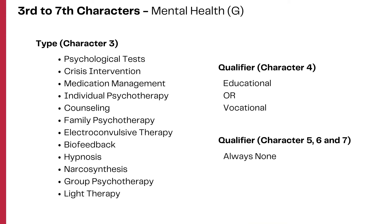The third character specifies the procedure type, such as crisis intervention or counseling. There are 12 types of mental health procedures: psychological testing, crisis intervention, medication management, individual psychotherapy, counseling, family psychotherapy, electroconvulsive therapy, biofeedback, hypnosis, narcosynthesis, group psychotherapy, and light therapy. These are the 12 types listed in the third character.